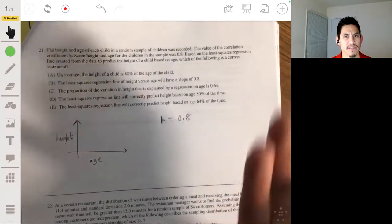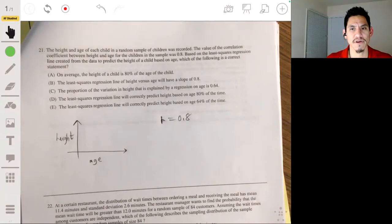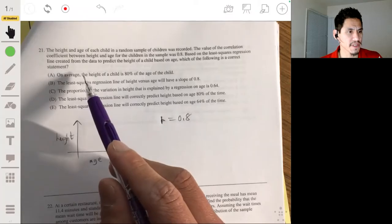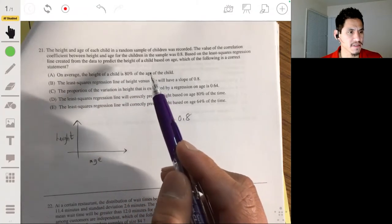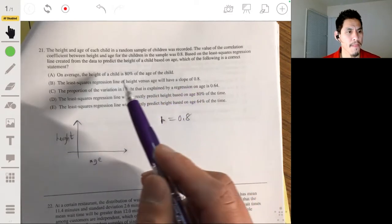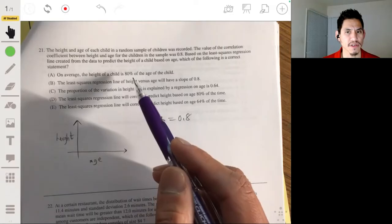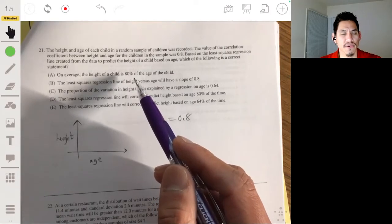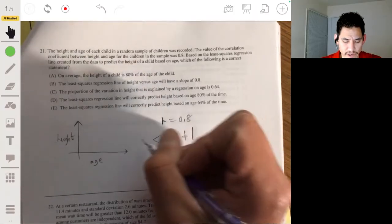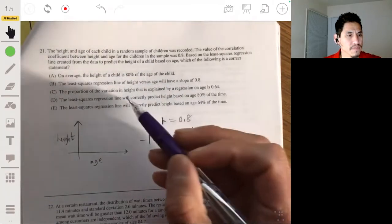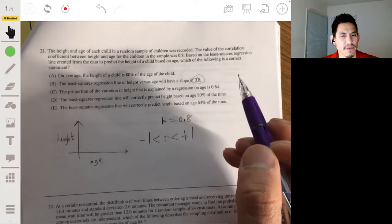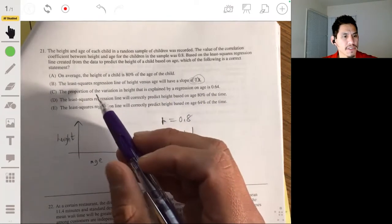So we can say that indeed as age increases, height increases. So that kind of, we all probably already know that. So let's see which of these would make sense. On average, the height of a child is 80% of the age of a child. Nope, not that. It's not exactly that. The correlation coefficient tells you the strength of a linear relationship. One being the strongest positive correlation, negative one being the strongest negative correlation and zero being the weakest. So remember that R goes between positive one and negative one. The least squares regression line of the height versus age will have a slope. No, it doesn't tell you exactly the slope. Don't get that mixed up. There's a relationship to some extent, but it doesn't mean strictly that. All we can say is the slope is positive.